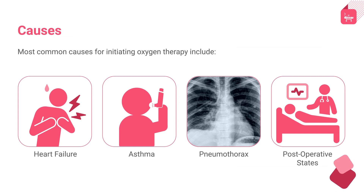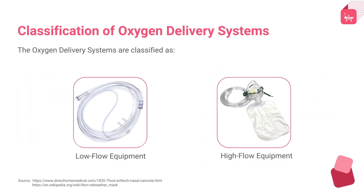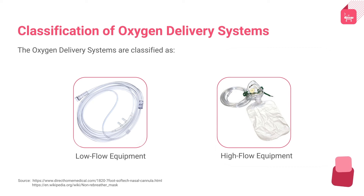Let us discuss the various oxygen delivery systems used to deliver oxygen in critically ill patients. There are a wide range of devices used to provide oxygen support. These have been classified based on low-flow or high-flow equipment, providing an uncontrolled or controlled amount of supplemental oxygen. The major basis for selection of delivery system should be treating hypoxia and preventing the complications of hyperoxygenation.